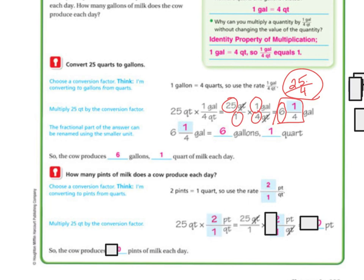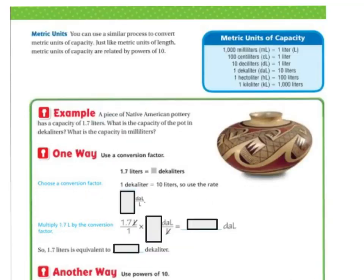So we've got 25 times 2 over 1. 25 times 2 is 50, and 1 times 1 is 1. So I'm going to get 50 over 1. So my answer is going to be 50 pints. So the cow produces 50 pints of milk.